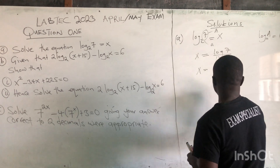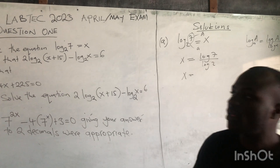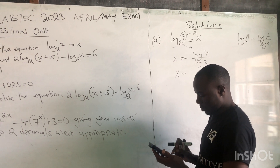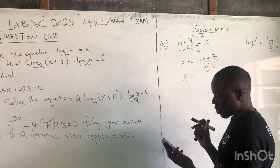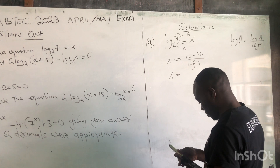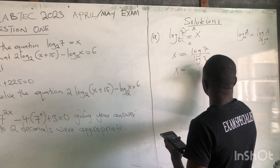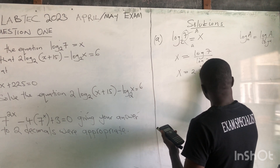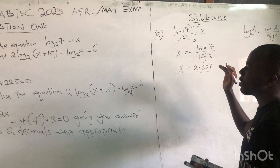Whatever answer we get when we compute this on the calculator, that is the value of x. On the calculator, I'll punch log 7 divided by log 2. The answer I'm getting is 2.807. So when you write this to three decimal places, this is your value of x for the first question.